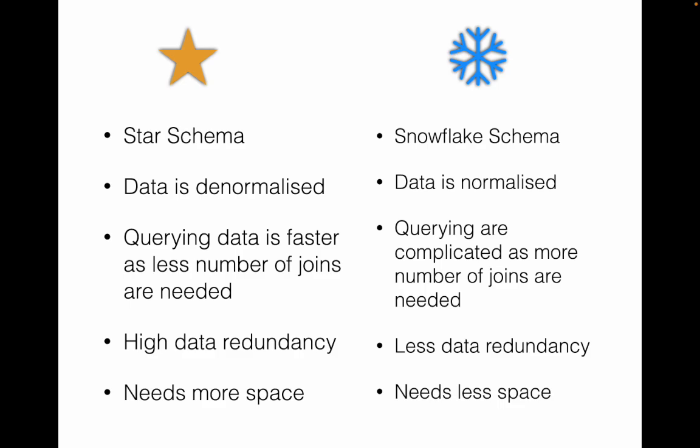The main drawback of star schema is that data is denormalized and redundant, which leads to wide dimension tables that take up more space and can cause data inconsistency issues. As the schema flattens the dimension hierarchies into a single table, the depth and breadth get limited, making star schema unsuitable for large data warehouses.